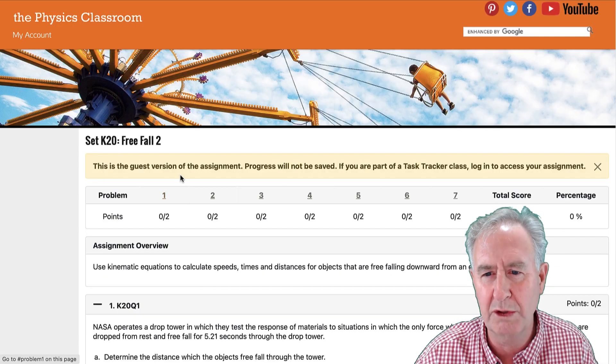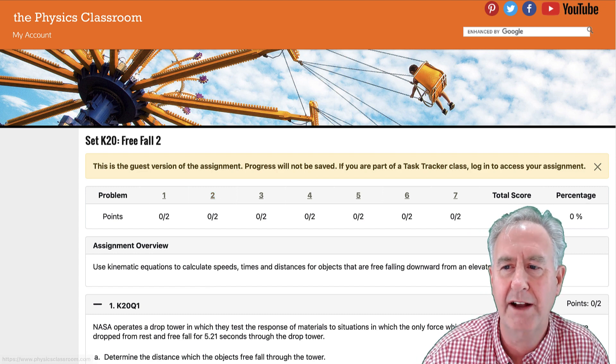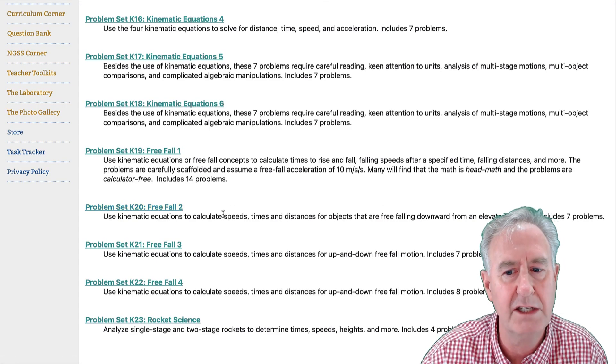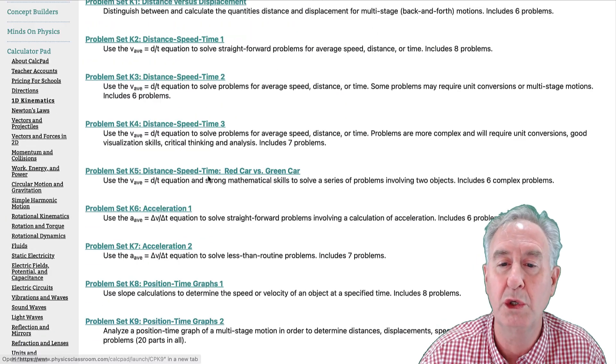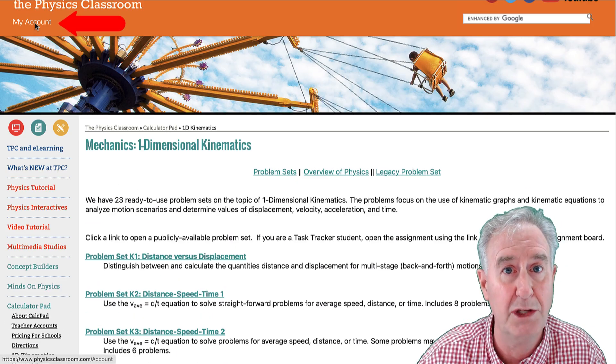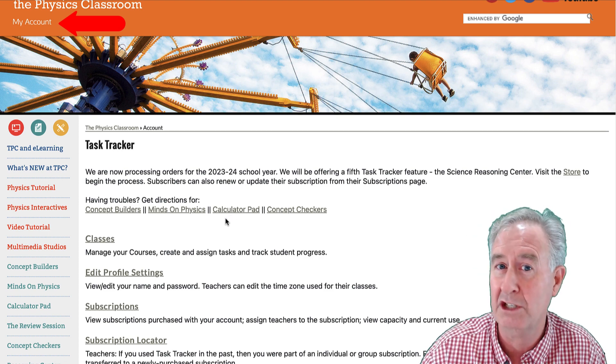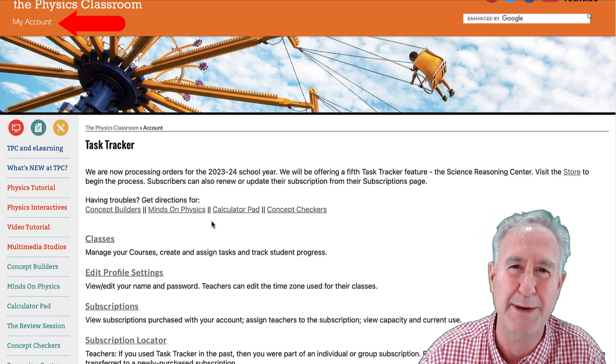Now after I've been doing some studying, I've come to the conclusion I'd like to assign this problem set K19 to my class. So what I'm going to do is go to my account page, log into Task Tracker, and create that as a problem set and learn how to customize it.